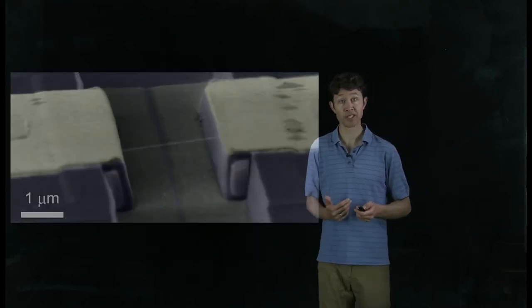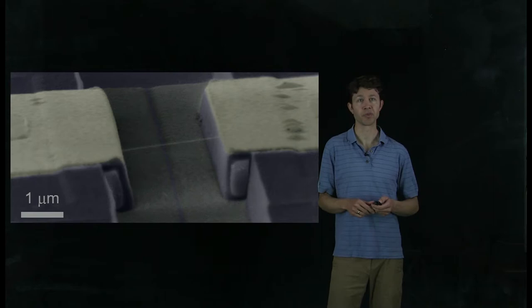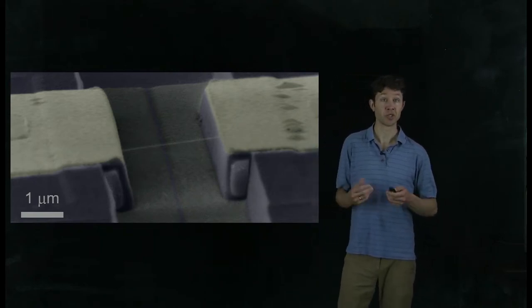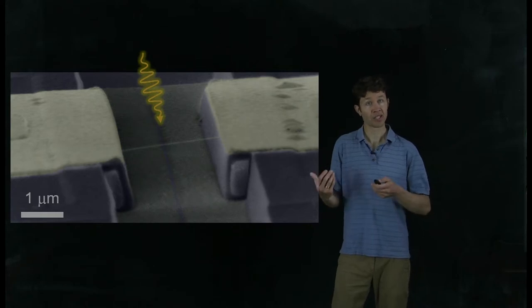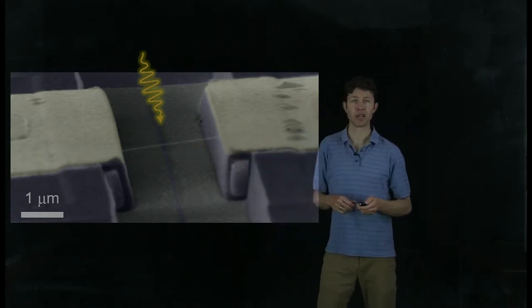So we're experimentalists, and we tackle this by building our own tiny miniature solar cells from single carbon nanotubes. Here's a scanning electron microscope image of one of the nanotube solar cells that we made. The light's going to be absorbed, and the center of this white string is the carbon nanotube.